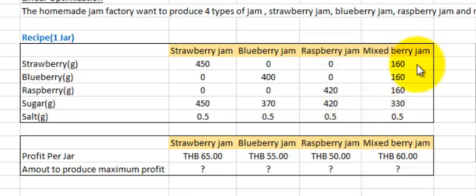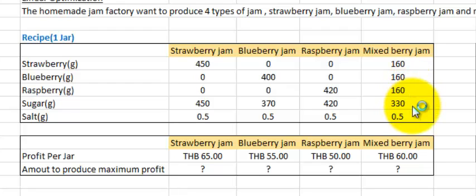For the mixed berry jam, it takes 160 grams of strawberry, 160 grams of blueberry, 106 grams of raspberry, 330 grams of sugar, and 0.5 grams of salt.